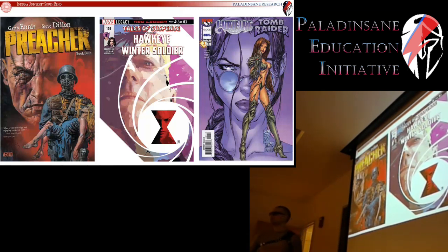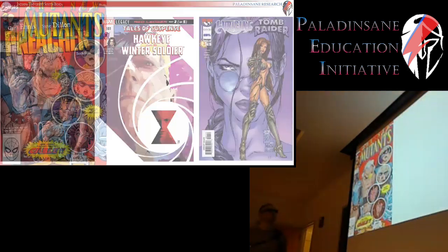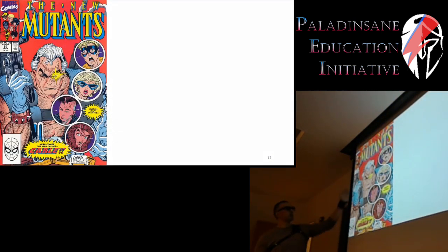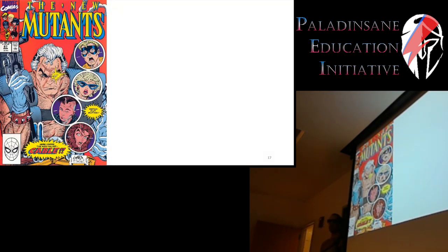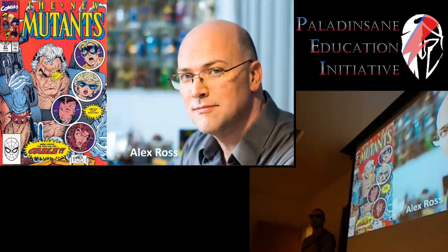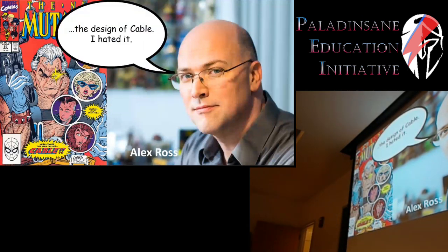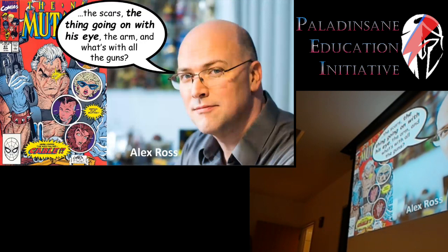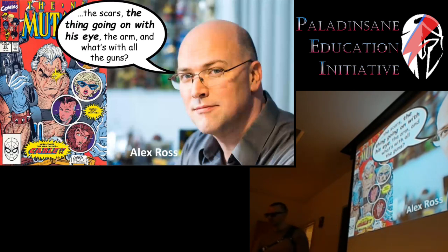More so than that, it's also known to comic book artists. For example, Cable — yet another example of close-up eye asymmetry — was designed by Rob Liefeld. Alex Ross, another comic book artist, said in an interview: 'The design of Cable, I hate it.' Importantly, he cited 'the scars, the thing going on with his eye, the arm, and what's with all the guns.' That phrase 'the thing going on with his eye' is evidence that comic book artists are aware of this device, aware of its use and existence. It is a lexical item in their visual language.